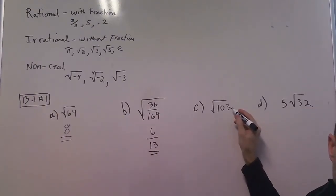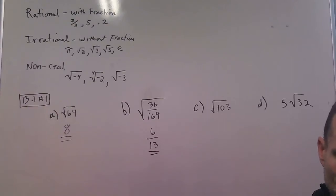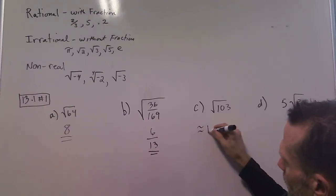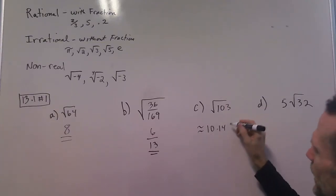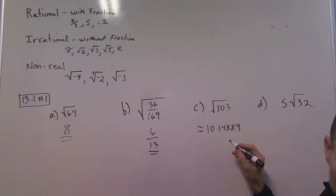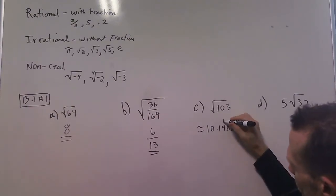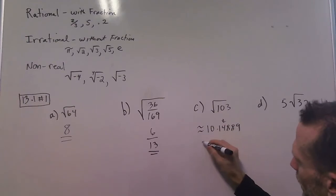And then this one we do on our calculator. We can just punch in the radical 103 and we get approximately 10.14889, but it does say round to two decimal places, so we want to round to right here and we get approximately 10.15.